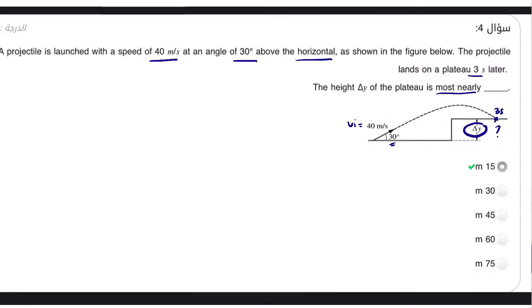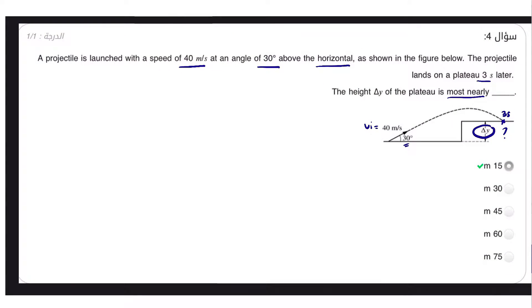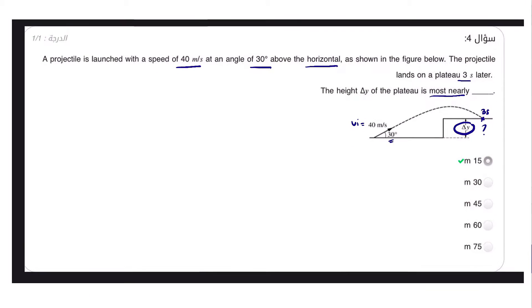To solve this problem, recall the equations of motion that are applicable for the y component of a projectile. We have the final vertical velocity, vfy, equals the initial vertical velocity plus gt.